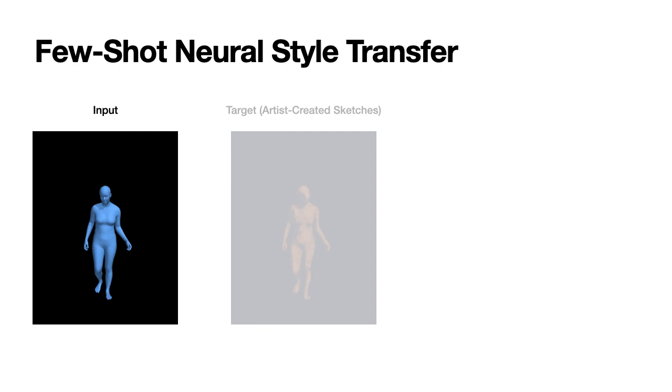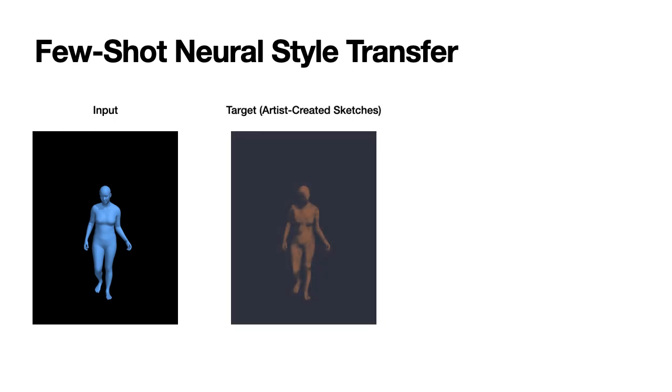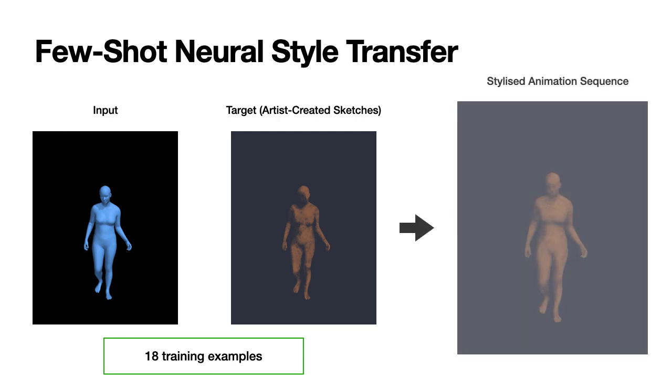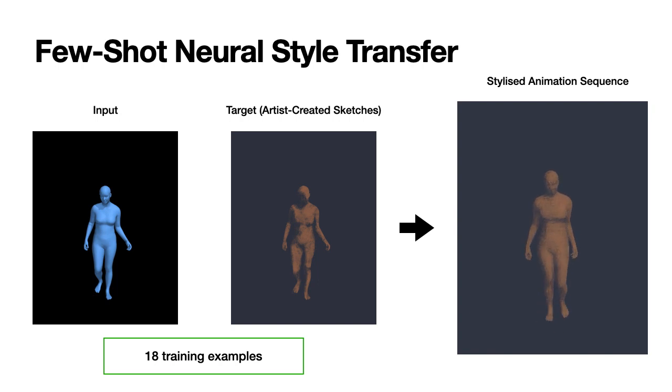Finally, we showcase a few-shot neural style transfer scenario. Here, a small set of simple sketches was created manually by an artist on top of mesh renderer. Given only 18 training examples and applying data augmentation techniques like rotations and rescalings, our model can learn to transfer the artistic style and create an animatable stylized character. We believe this can be potentially useful for computer graphics and animation artists, who instead of redrawing each frame or creating detailed 3D models, can simply provide to the network a few informative sketches in particular poses and camera views.